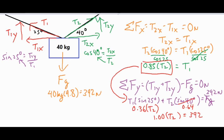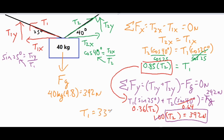So 1.00 × T2 = 392, and dividing both sides by 1 gives T2 = 392 newtons. To solve for T1, we use T1 = 0.85 × T2 = 0.85 × 392, which gives T1 = 333.2 newtons. Those are our final values for both tensions T1 and T2.